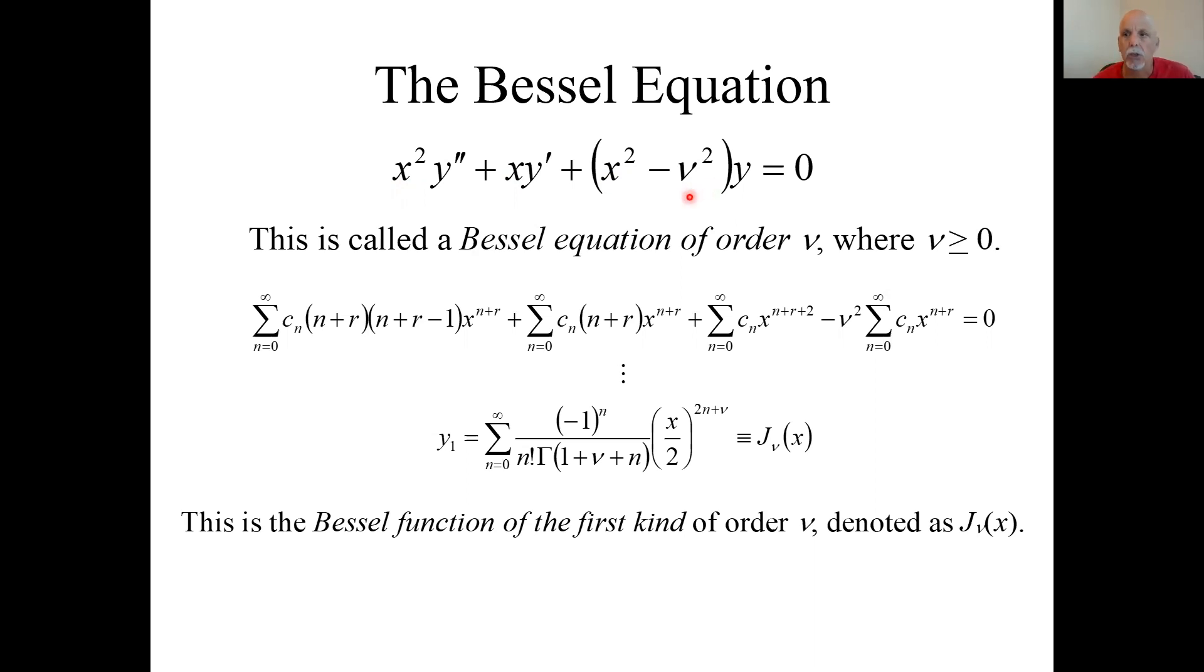And this is new. This is a Bessel equation of order nu. And the indicial roots are plus and minus nu, which means we're guaranteed at least one Frobenius series solution to this differential equation. And the larger indicial root will be nu.